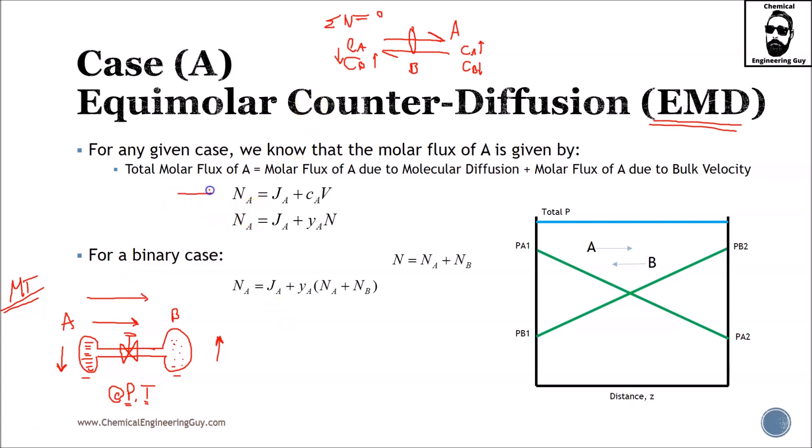Recall from previous calculations and lectures that the total flux of A, flux of A in this pipe, is due to two main things. The actual diffusion, which will be accounted for JA, and the bulk velocity. So here we have total molar flux of A will be equal to the molar flux of A due to molecular diffusion, which we model with Fick's law, and then we have molar flux of A due to bulk velocity.